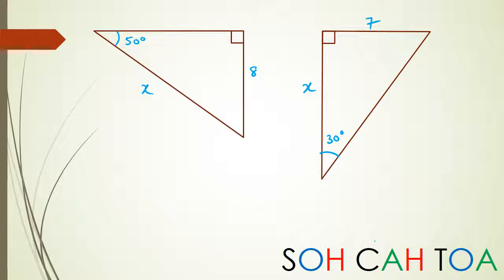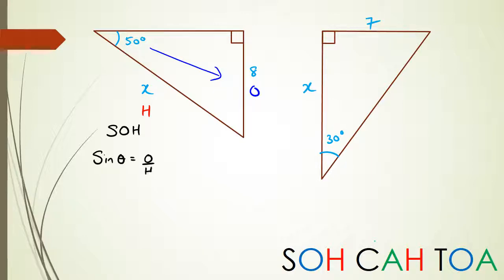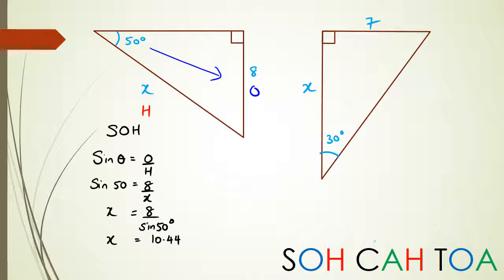Okay, assuming you've paused and tried these questions, I'm going to show you the answers. For the left-hand triangle, the side opposite the right angle is hypotenuse, and the side opposite the angle is opposite. I've got O and H, so I use SOH: sine of the angle equals opposite over hypotenuse. Sine 50 equals 8 over x. Rearranging: x equals 8 divided by sine 50, giving x equal to 10.44. A good check: the hypotenuse should be larger than 8, and 10.44 looks about right.